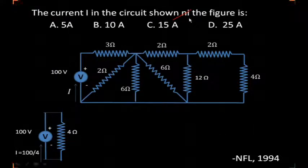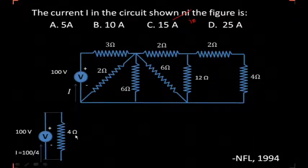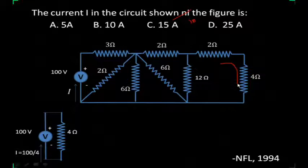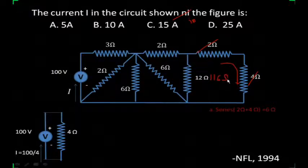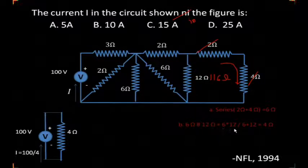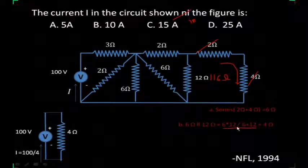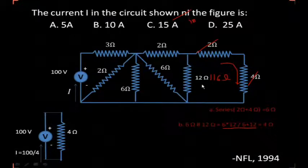The next question: find the current I in the circuit shown in the figure. First we need to simplify this network. This 2 ohm and this 4 ohm are in series, giving 6 ohms. Then 12 ohm in parallel with 6 ohm — using the product-over-sum formula: 6 into 12 upon 6 plus 12. If two resistances are in parallel, take the product divided by the sum, and the value comes out to be 4 ohms.